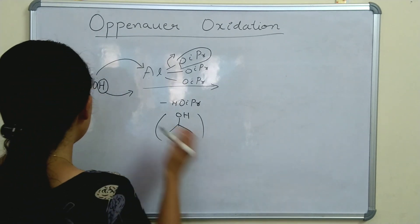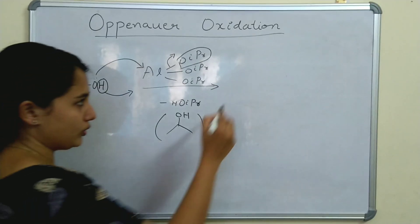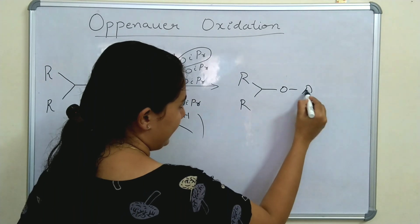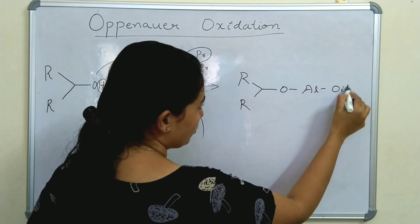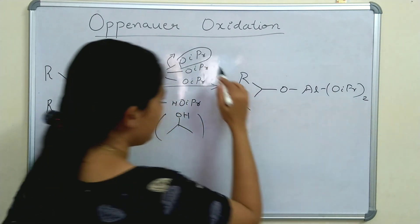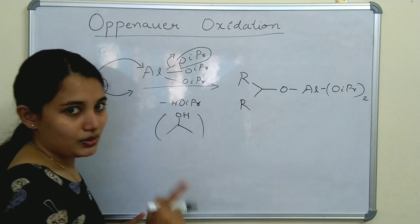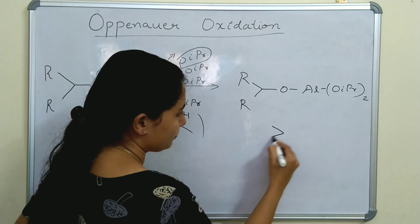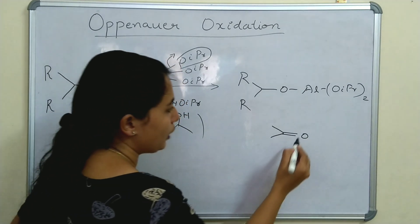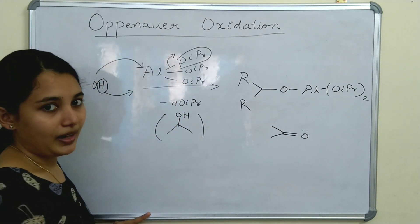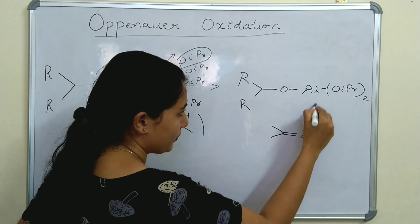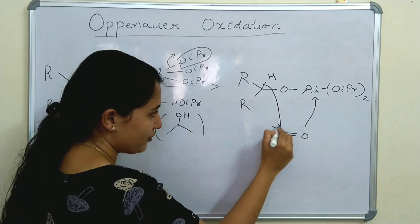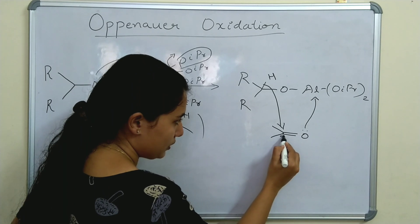Now what is the product? Oxygen and aluminium form a bond, so the product is a carbon bonded to oxygen and aluminium with two isopropoxide groups; one isopropoxide is eliminated. Now I already said a ketone is present, so the ketone, here it is acetone, will come into this reaction. Aluminium will again abstract electrons from this oxygen, and a hydride shift takes place to this carbonyl carbon.